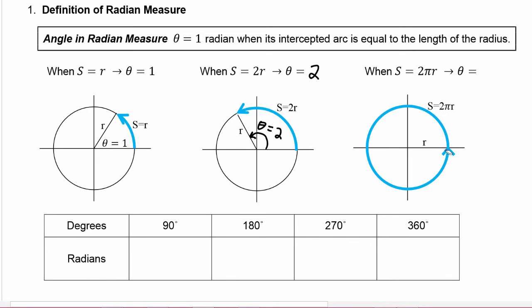Now you remember from your geometry class, going all the way around the circle, then the arc length is the circumference, which means the arc length would be 2πr.